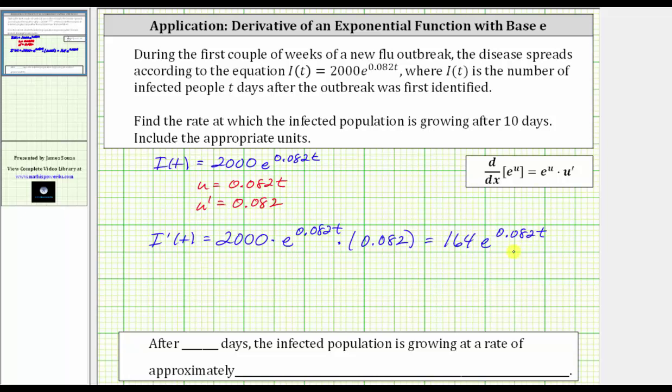And now we can use this function to determine the rate of growth of the infected population after t days. Because we are looking for the rate of growth after 10 days, we need to find I'(10). I'(10) = 164e^(0.082×10). Simplifying, we have 164e^(0.82).